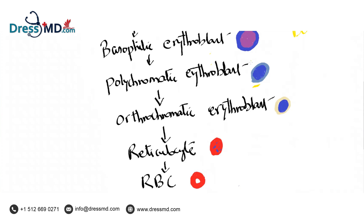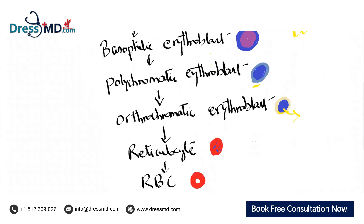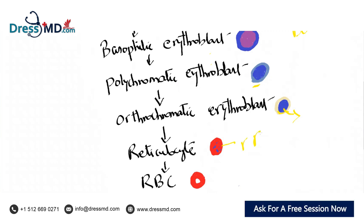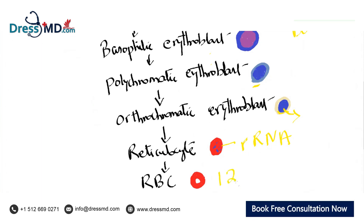In the polychromatic erythroblast the cell size is decreasing and the nucleus is also decreasing. In the orthochromatic erythroblast the cell size decreases further and the nucleus is trying to come out of the cell. RBCs and reticulocytes do not have a nucleus. Reticulocytes have RNA but no nucleus. The lifespan of the RBC is 120 days.